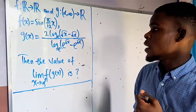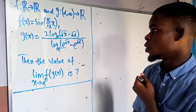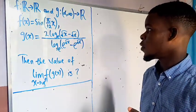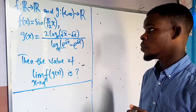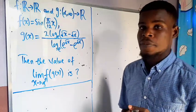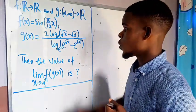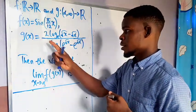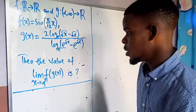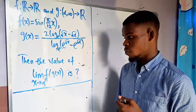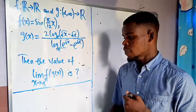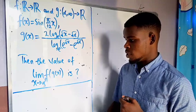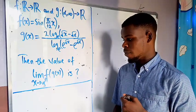We have f to be a real-valued function from the real domain, and g is a real-valued function from the interval alpha to positive infinity. f is defined as sine of pi over 12 times its input, while g is defined as 2 times the whole of that. We are asked to find the value of the limit of the composition of f and g as x tends to alpha from the right.